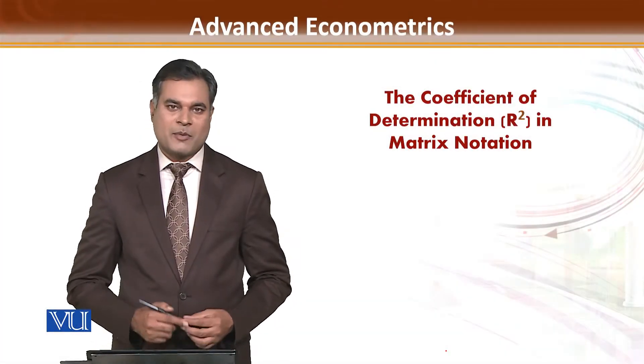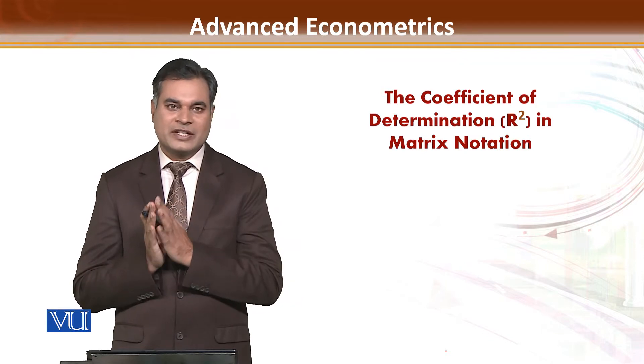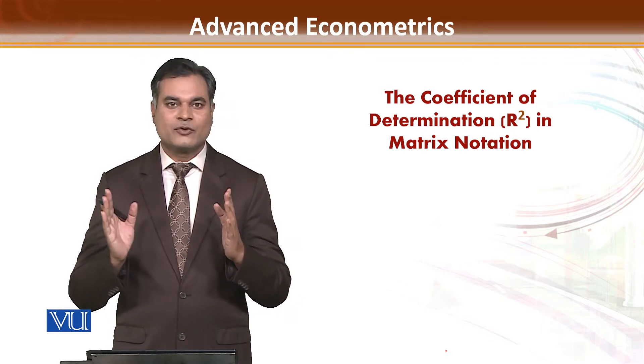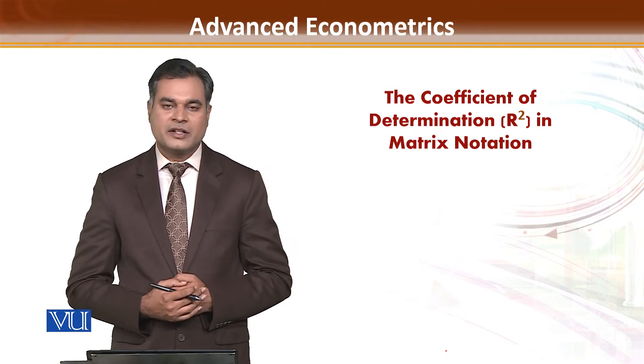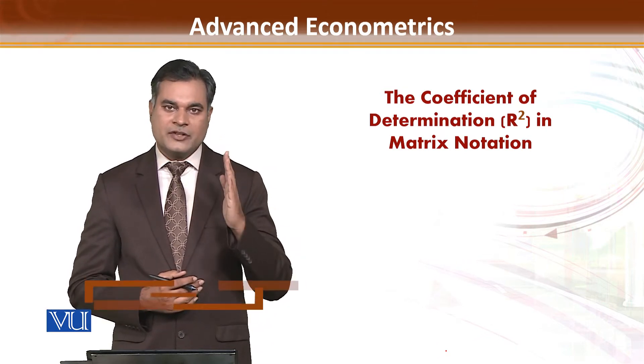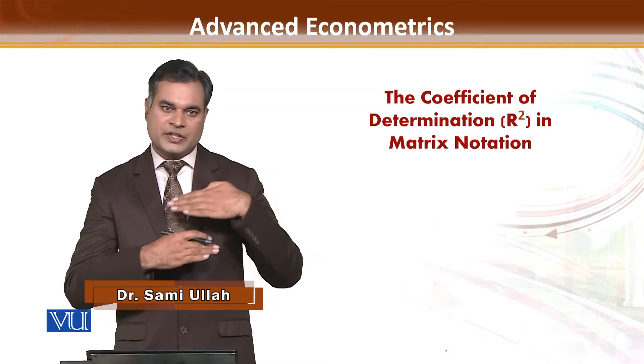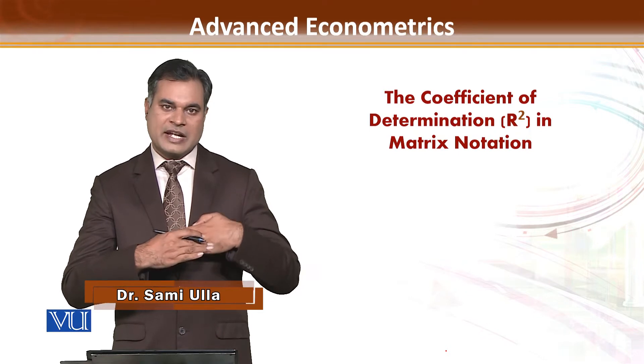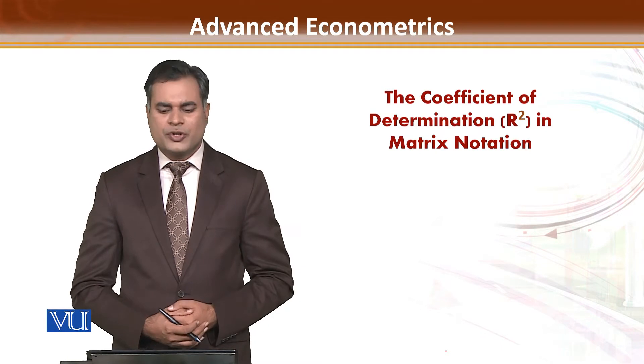Dear student, as we have discussed about the characteristics of beta or estimated values, how we ensure that BLUE properties are satisfied or not, we have seen how the error or residual moves, what relation one term has with another, what happens between one component and another. After discussing these things, we are going to discuss another very important aspect of regression.